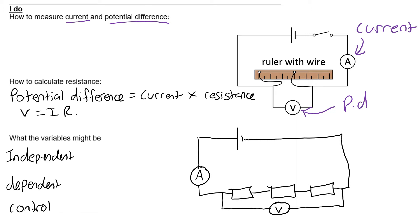The ammeter counts how many charges go past it every second, so it needs to be placed within the loop of the circuit. You measure potential difference with a voltmeter, and the voltmeter needs to be placed in parallel. The reason is that the voltmeter connects to the circuit in two different places — it measures the potential at one place, then another, and calculates the difference. That's why the voltmeter goes in parallel.